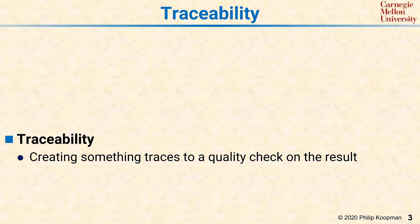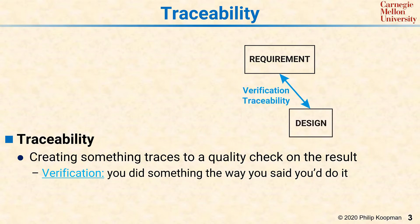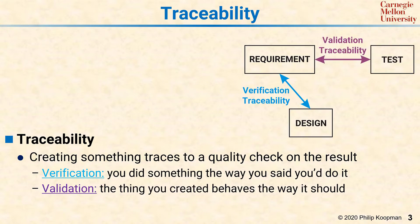Traceability is creating something that traces to a quality check on the result. There are two general types of traceability. One is verification, which is asking the question: did you do something the way that you said you'd do it? And there's validation, which is asking a somewhat different question: did the thing you created behave the way it's supposed to? Generally speaking, you can think of verification as going up and down adjacent parts of the V, and validation as traversing across the V left to right, with testing going back to some design artifact to make sure it actually does what it's supposed to do.